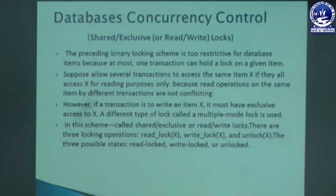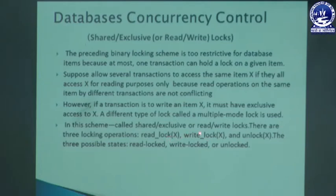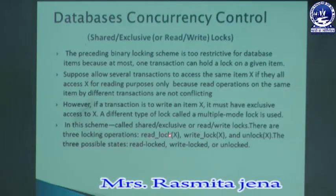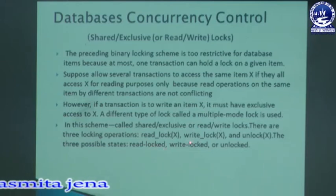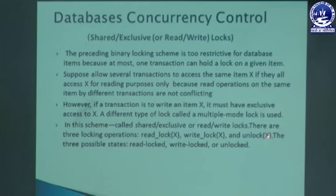In the read and write lock system, or two-phase locking system, there are three locking operations: read lock, write lock, and unlock. There are three states corresponding to these operations — read lock X, write lock X, and unlock X. These are the various states of the two-phase locking system.